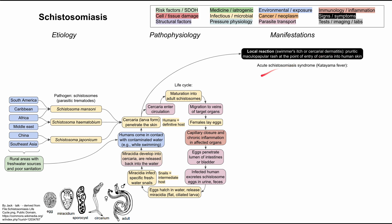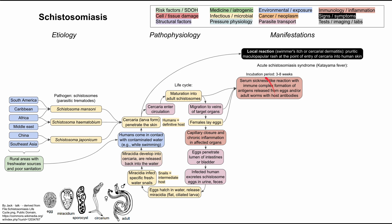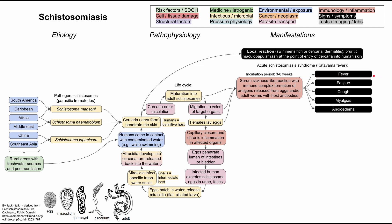Another form is a more widespread systemic reaction called acute schistosomiasis syndrome. This occurs from the parasite in its adult form or from the eggs, involving a serum sickness-like reaction with immune complex formation from antigens released by the eggs or adult worms. These immune complexes deposit throughout the body, causing a broad immune reaction. The incubation is typically three to six weeks, with symptoms including fever, fatigue, cough, myalgias, and angioedema. This usually resolves spontaneously after two to ten weeks.